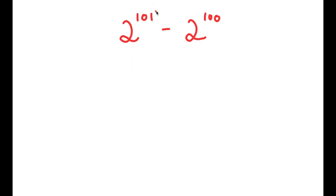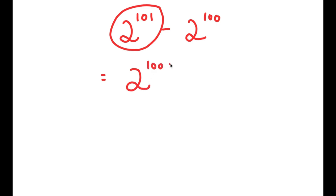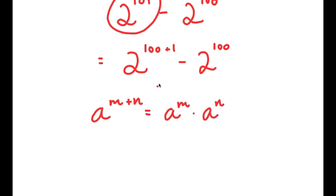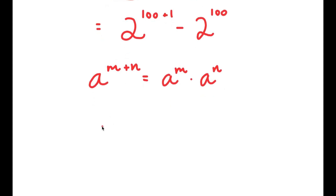So to solve this problem, I'm going to first start by rewriting 2 to the power of 101 as 2 to the power of 100 plus 1. Now, the reason I did that is because now I can use this property that states that a to the power of m plus n is equal to a to the power of m times a to the power of n. So 2 to the power of 100 plus 1 is going to equal 2 to the power of 100 times 2 to the power of 1.